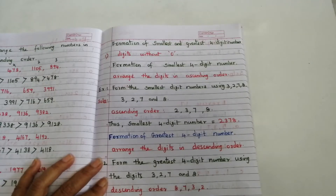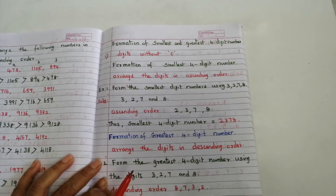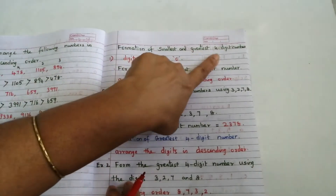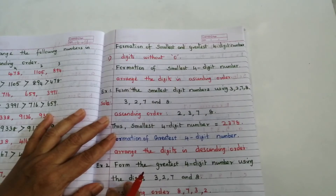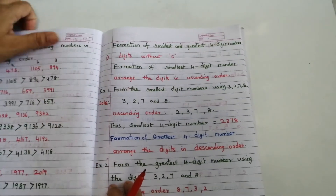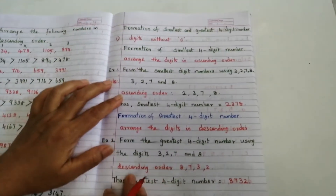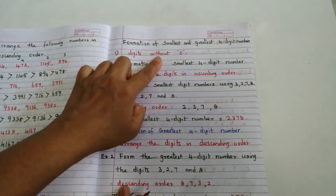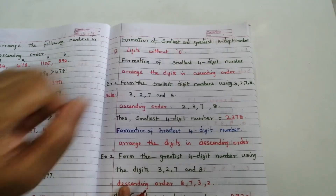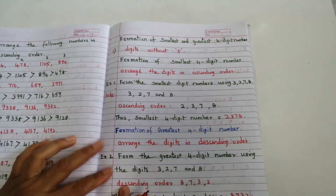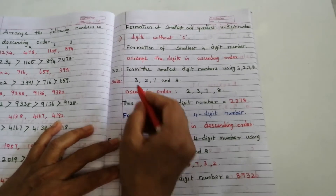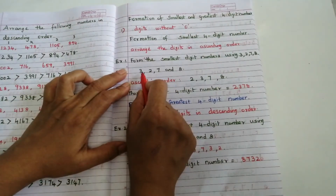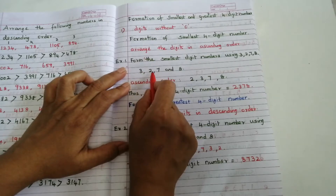Hi dear students, today we are going to discuss the formation of smallest and greatest four-digit numbers. The first case is digits without zero.